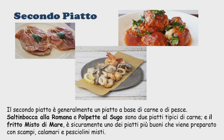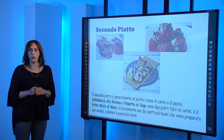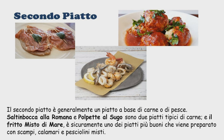Dopo il primo piatto, gli italiani a pranzo oppure a cena mangiano il secondo piatto. Il secondo piatto è generalmente un piatto a base di carne o di pesce. Saltimbocca alla romana come la prima foto, polpette al sugo come nella seconda foto, sono due piatti italiani tipici a base di carne. Nella terza foto avete il fritto misto di mare, che viene preparato con scampi, calamari e pesciolini misti.